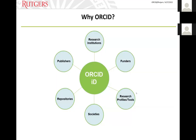Why did we want to implement ORCID? Name ambiguity is a big problem for researchers. An ORCID ID provides a unique and persistent digital identifier that distinguishes a researcher from others, connects researchers and their research activities throughout their career, and through integration in major research systems, platforms, or workflows, helps ensure that a researcher's work is properly attributed and recognized. As an open, community-driven, non-profit organization, ORCID not only provides a registry of unique identifiers but also an API that allows research communities to embed that identifier in research systems. Nowadays, funders, publishers, and societies are requiring ORCID IDs.